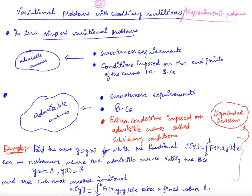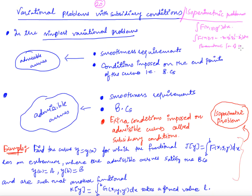We are looking at generalizations of variational problems. We started with the simple problem of integrating F(x, y, y') dx, then moved to functions with multiple dependent variables y1 through yn and their derivatives, then to parametric forms, then to functionals where higher derivatives are involved, as in F(x, y, y', ..., y^n) dx. Now we are moving to another important generalization: isoperimetric problems.